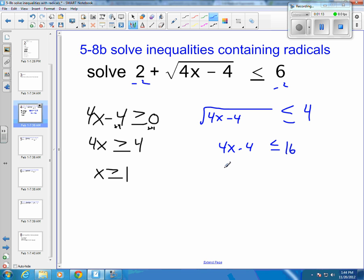After that you would get the x by itself, so this becomes a pre-algebra type problem. So 4x would be less than or equal to 20 when you add 4 to both sides. And then you divide both sides by 4, so x has to be less than or equal to 5. So your final answer is x has to be greater than or equal to 1, and it has to be less than or equal to 5.